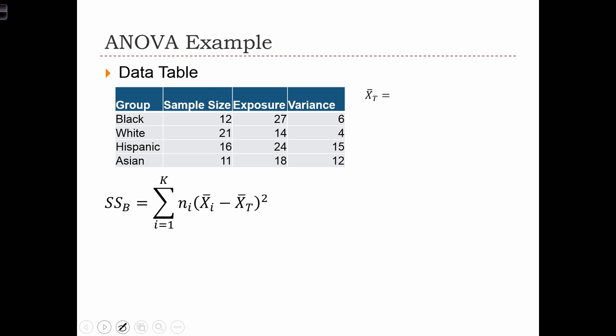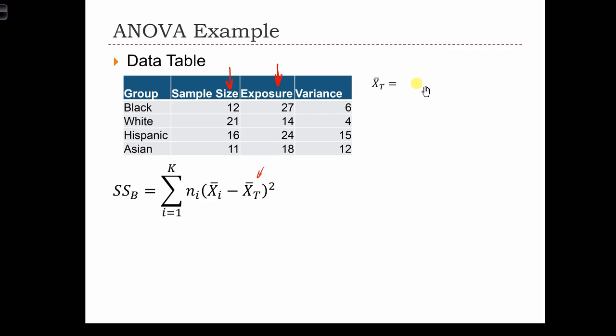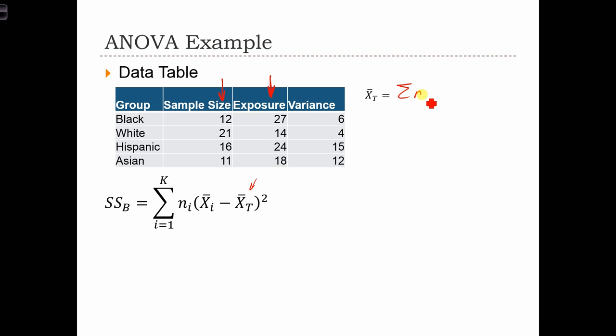First of all, we're going to need to calculate the between-group sum of squares. And this is the formula for doing that. The formula depends on the total mean. We can calculate the total mean by taking the group exposure means and weighting them by the group sample sizes. So in other words, it's the sum of n i times x bar i all over capital N. And in this case, I know that the total mean equals 20. So in order to calculate this, we're going to substitute the total mean here as 20.